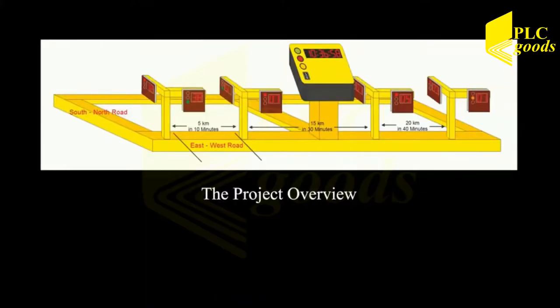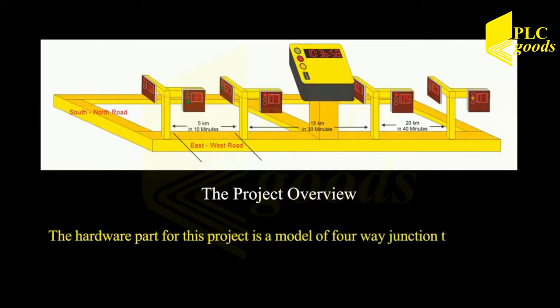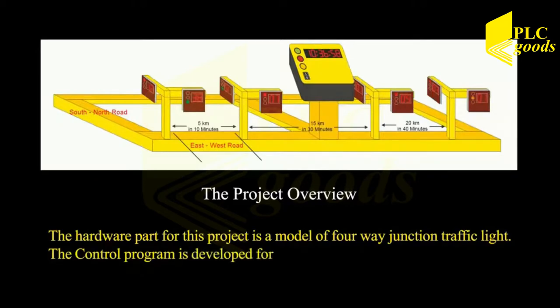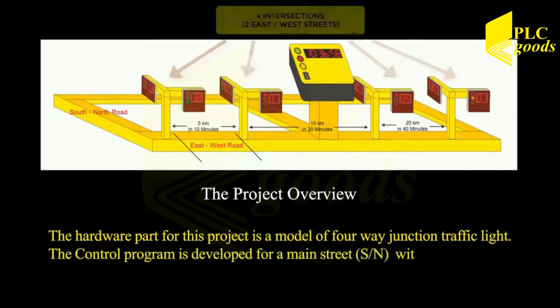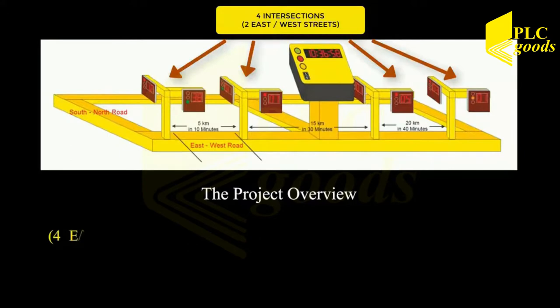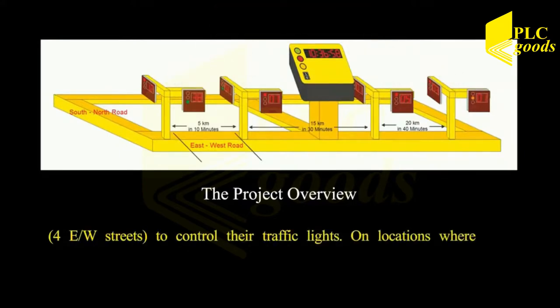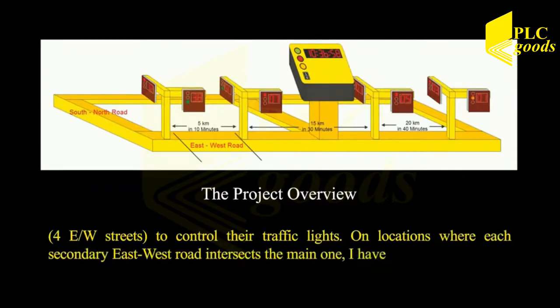The project overview: the hardware part for this project is a model of a four-way junction traffic light. The control program is developed for a main street south-north with four intersections for east-west streets to control their traffic lights on locations where each secondary east-west road intersects the main one.